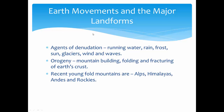Earth movements and major landforms: you should know the agents of denudation — running water, rain, frost, sun, glaciers, wind, and waves. Orogeny means the mountain-building process, formed by folding and fracturing of the Earth's crust. Examples of young fold mountains formed by orogeny include the Alps, Himalayas, Andes, and Rockies. Questions about these mountains have appeared in UPSC mains examinations.